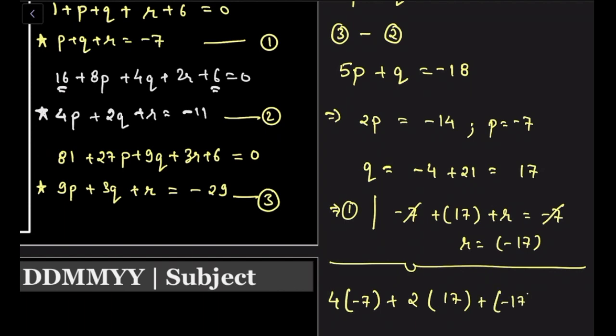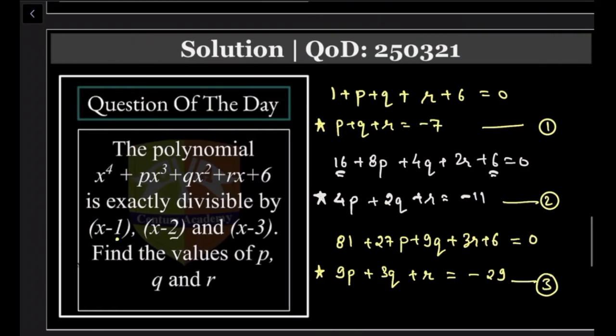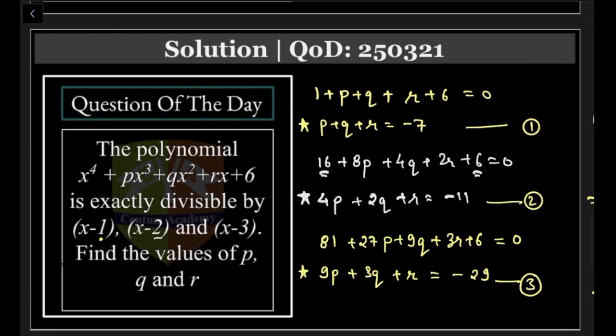This is -28, this is 34, it is coming out to be -11. Yes, verified. Easy, sure. So this was today's QOD. Your answer for p, q, and r: find the values of p, q, and r: -7, +17, and -17. Okay.